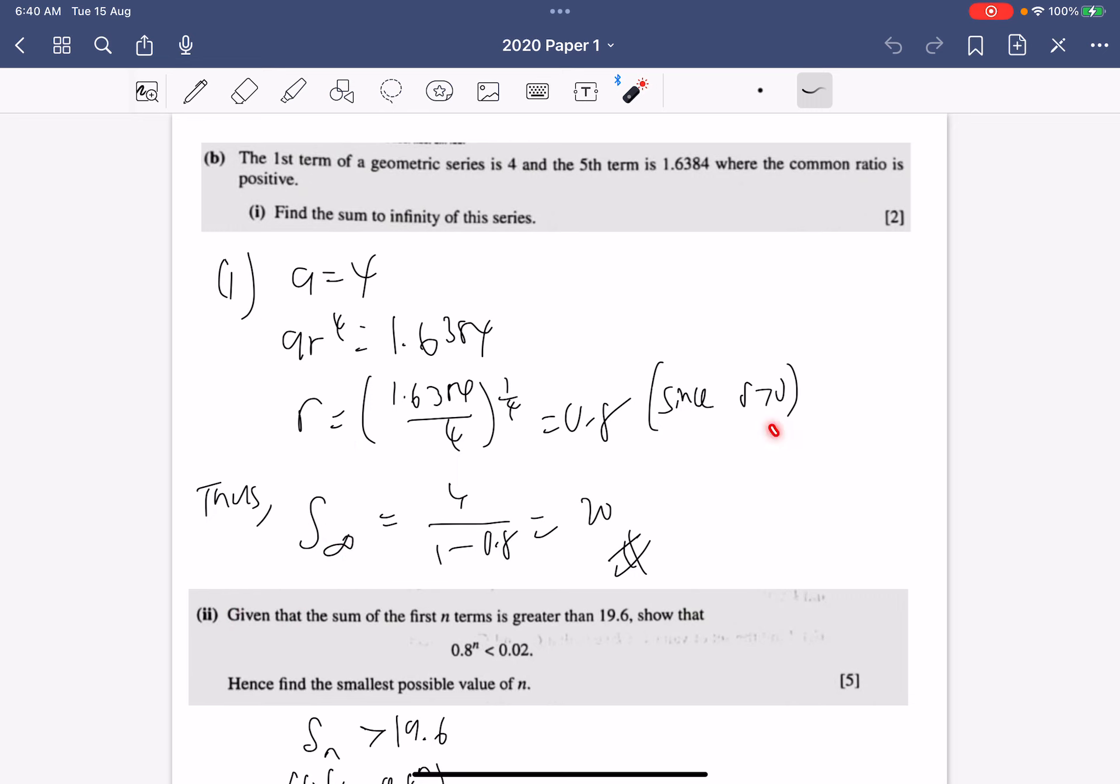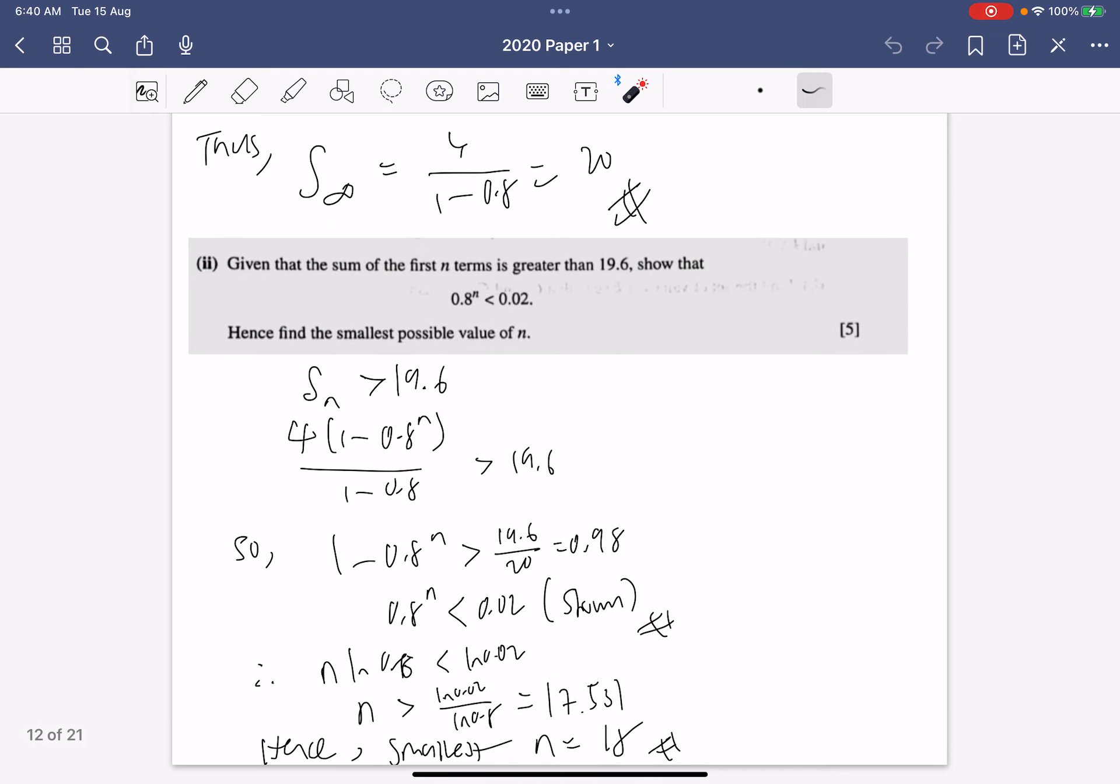And thus the sum to infinity will be a over 1 minus r, so a is 4 divided by 1 minus 0.8, so the sum to infinity is 20. And given that the sum of the first n numbers is greater than 19.6.